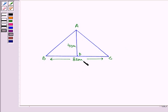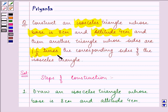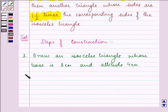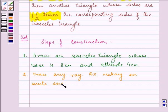Now we need to construct another triangle whose sides are 1.5 times the corresponding sides of the isosceles triangle. So the second step is to draw any ray BX making an acute angle with BC.